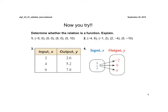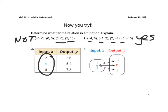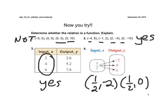Pause this for a moment and you try. In number 1, the 5's repeat — 5 goes to 0 and 5 also pairs with 10 — so this is not a function. Here, none of the x values repeat, so yes, that is a function. Here again, none of those repeat, so yes, it's a function. But in this case, the same input is paired with three different outputs: 1/2 comma negative 2, 1/2 comma 0, and 1/2 comma 4 — the x value is repeating with different y values, so this is not a function.